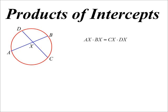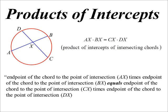The way I tend to remember it is: endpoint of the chord to the point of intersection, times endpoint of the chord to the point of intersection, equals endpoint of the chord to the point of intersection, times endpoint of the chord to the point of intersection. 'Product of intercepts of intersecting chords' will be fine for the test.